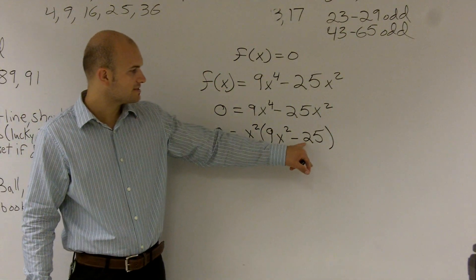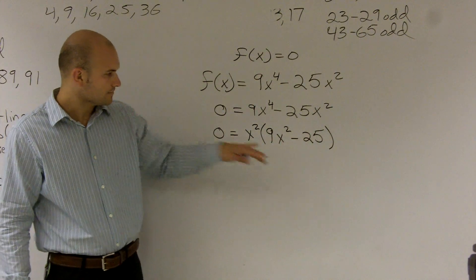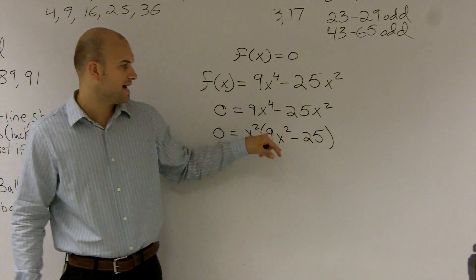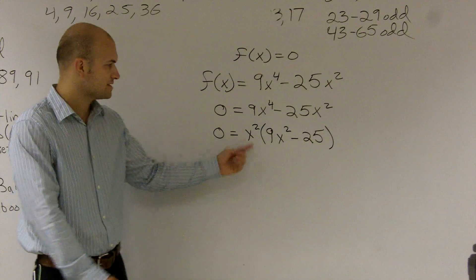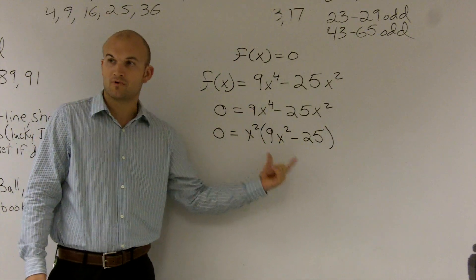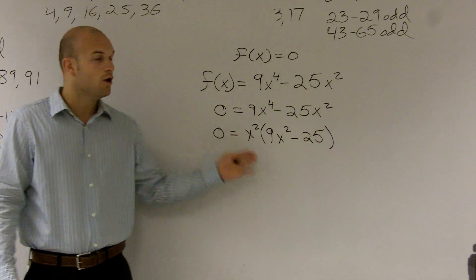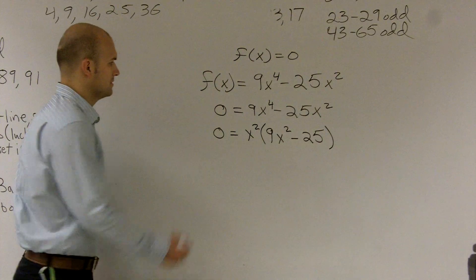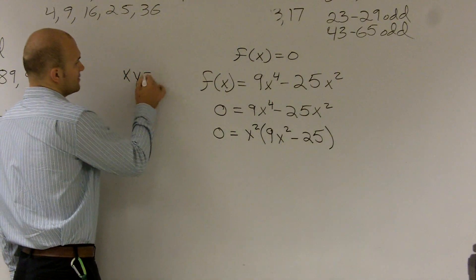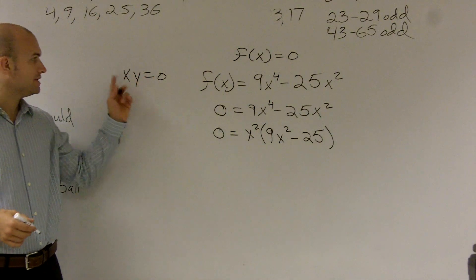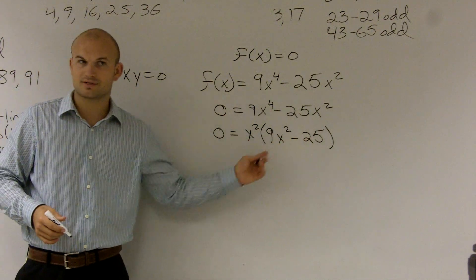So now what I can say is, well, now I can say either x squared equals zero or 9x squared minus 25 equals zero. Because if these are multiplied by each other, one of these has to equal zero. The way I like to always represent it is if xy equals zero, either x or y is zero. Same thing. These are just a little bit more difficult expressions.